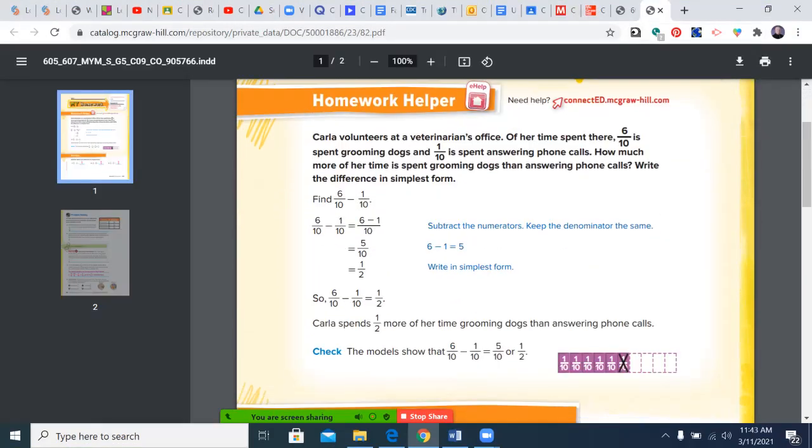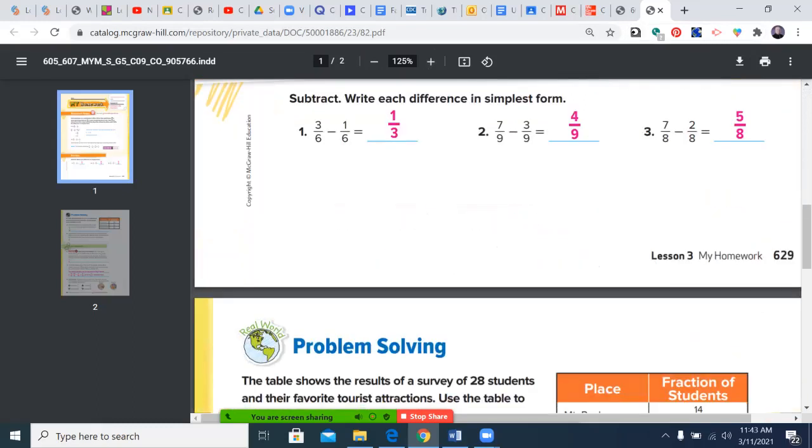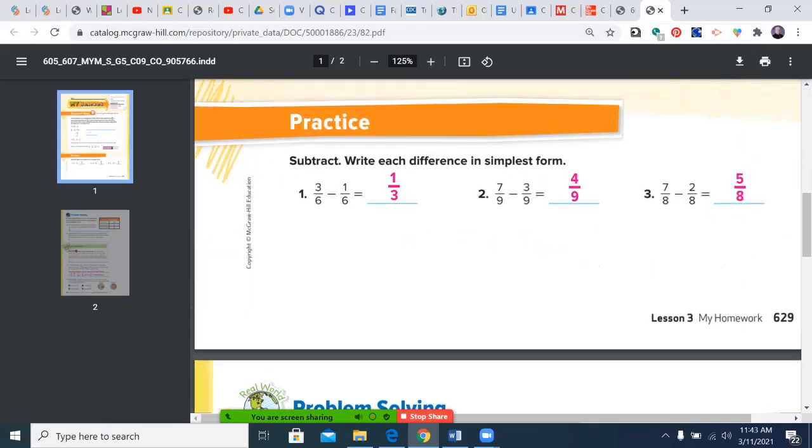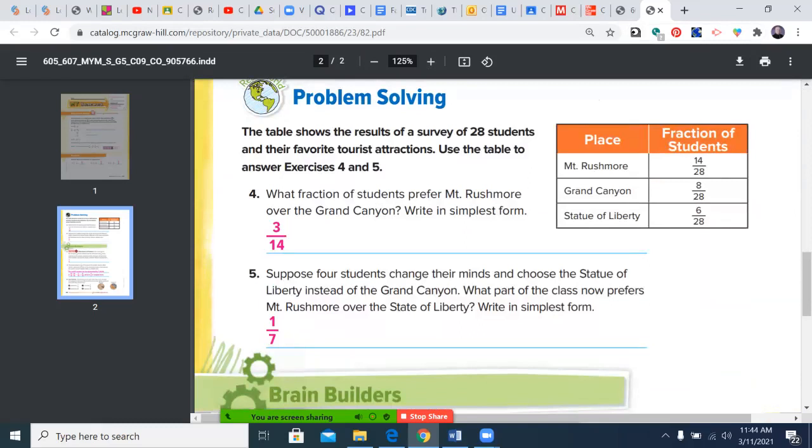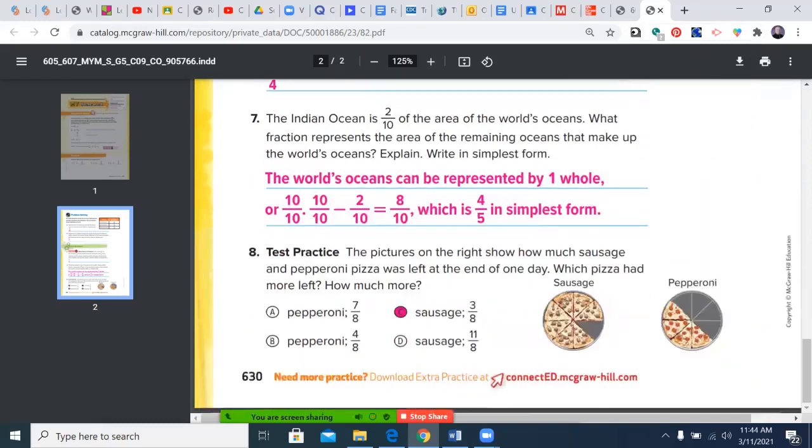Let's begin by looking at our previous day's assignment, which was subtracting like denominators and remembering to put in simplest form. So two-sixths becomes one-third, four-ninths stays the same, five-eighths stays the same, three-fourteenths, one-seventh, one-fourth, four-fifths in simplest, and sausage at three-eighths.